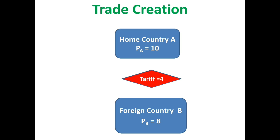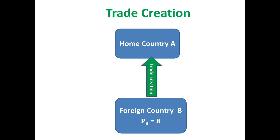Before forming the customs union, there is a tariff of Rs. 4. So even though foreign country B has a comparative advantage, they cannot export this commodity to the home country, which must rely on high-cost domestic production. When the two countries join a customs union and the tariff is eliminated, trade creation takes place — high-cost domestic production in country A is replaced by low-cost imports from country B. This is the basic principle of trade creation.